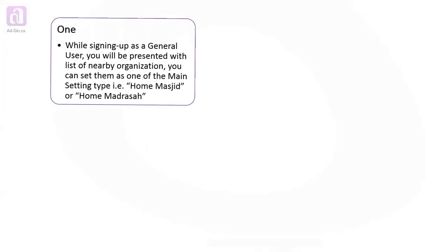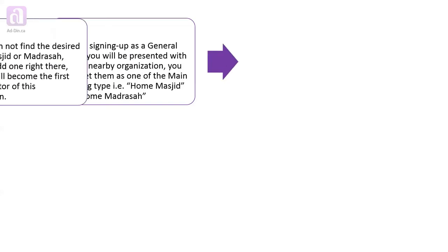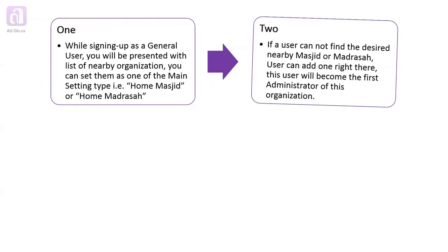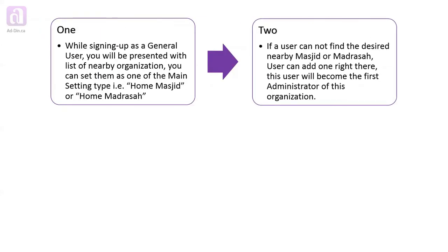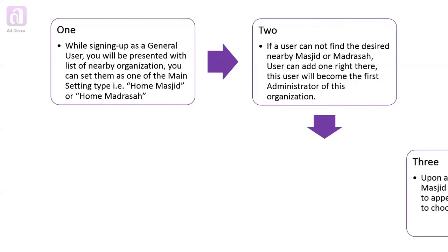There are four simple steps to get going. While signing up as a general user, you will be presented with the list of nearby organizations. You can set them as one of the main setting types — for example, home masjid or home madrasa. If a user cannot find the desired nearby masjid or madrasa, the user can add one right there.